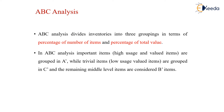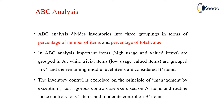The remaining middle level items are considered B items. So accordingly we divide them into A category, B category and C category. The inventory control is exercised on the principle of management by exception — that is, rigorous controls are exercised on A items, routine loose controls for C items, and moderate control on B items in ABC analysis.